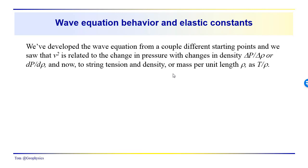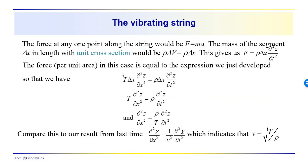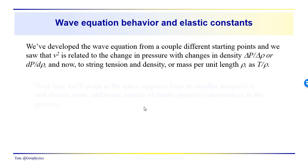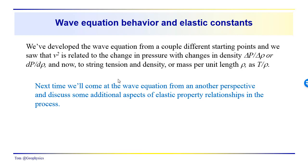We're seeing again that physical properties of the medium through which the wave is propagating appear as constants in this wave equation. We have two different expressions telling us something different about the medium. Next time we're going to come at the development of the wave equation from yet another direction — we'll be looking at stress-strain relationships, pulling out additional aspects of elastic property relationships. I hope this has been informative, thanks for joining us, and see you next time.